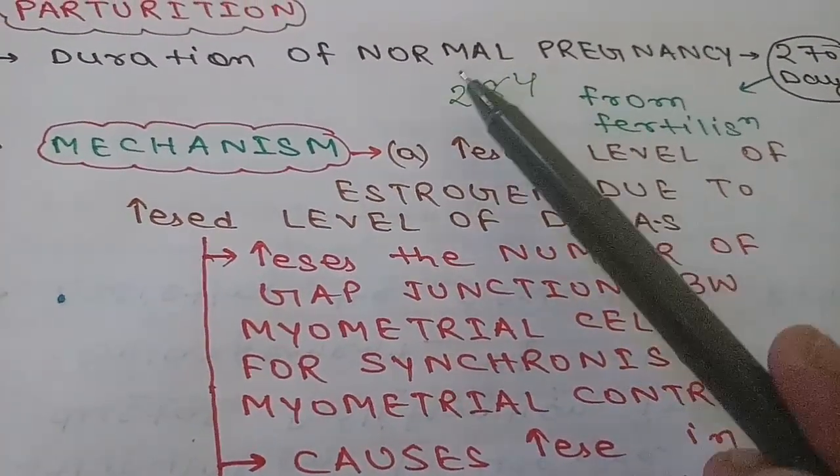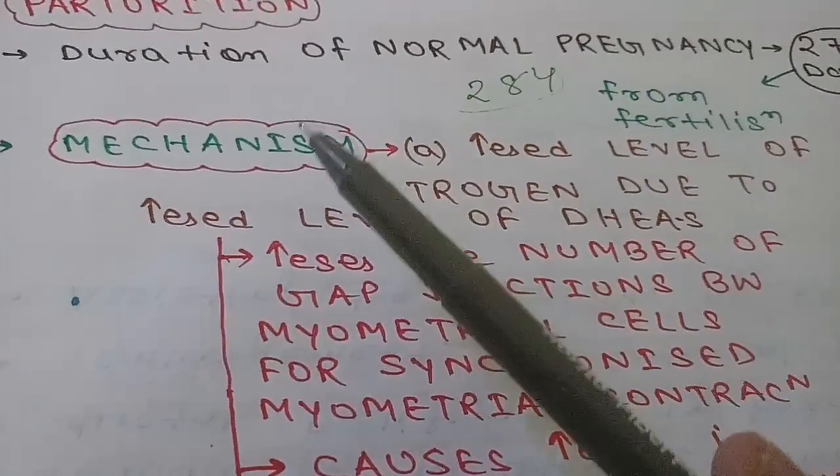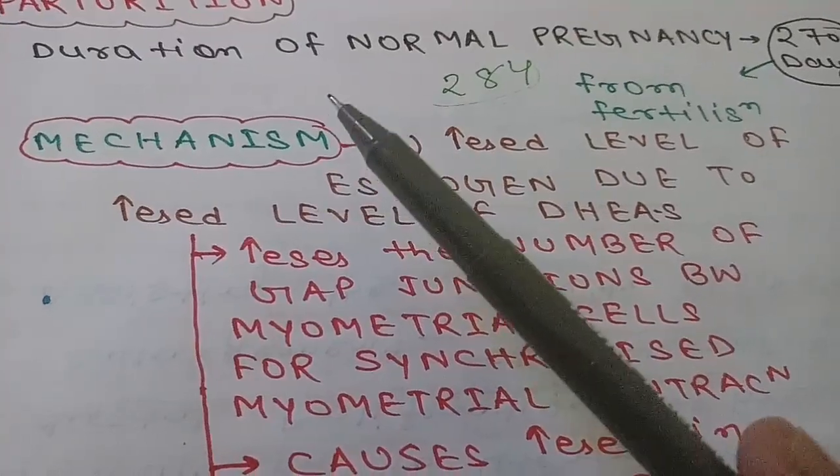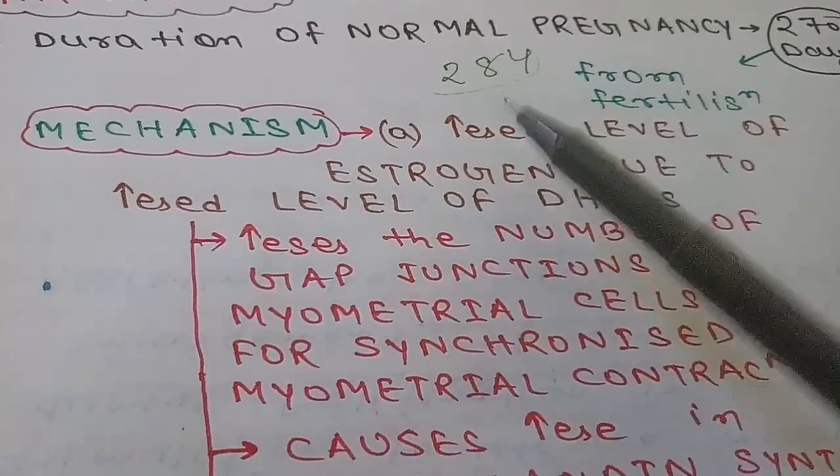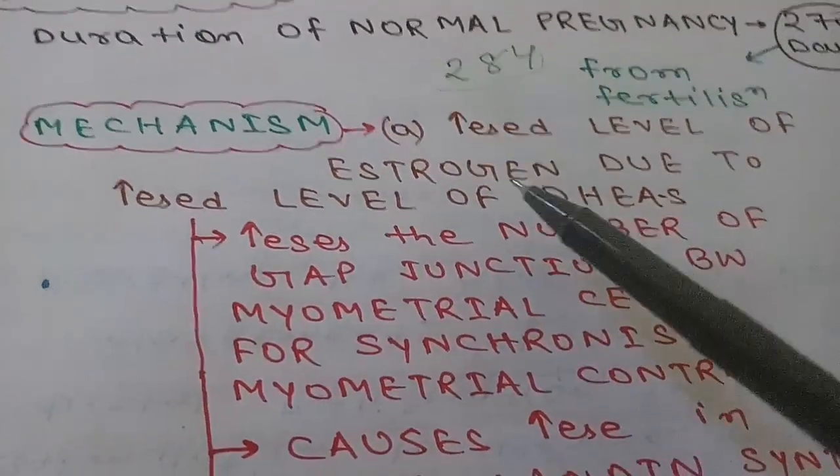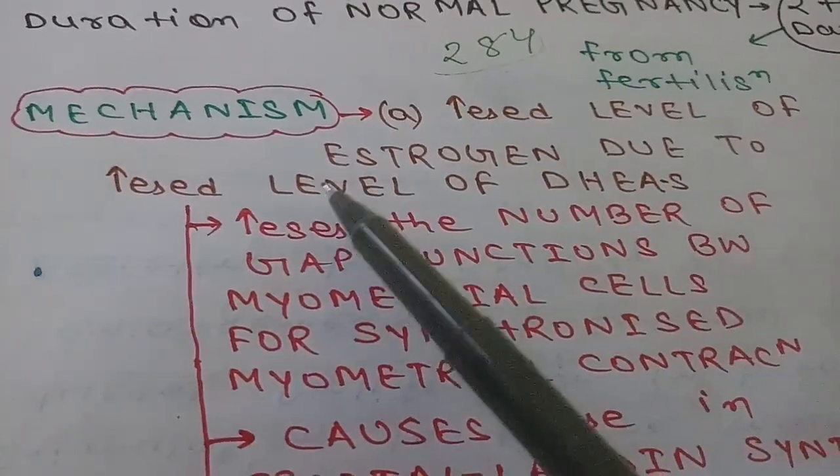Now coming to the mechanism behind parturition, there is still considerable uncertainty about the mechanism responsible for the onset of labor, but one factor is that increased estrogen level is responsible for parturition. This increase in estrogen level is due to the increase in dihydroepiandrosterone sulfates.